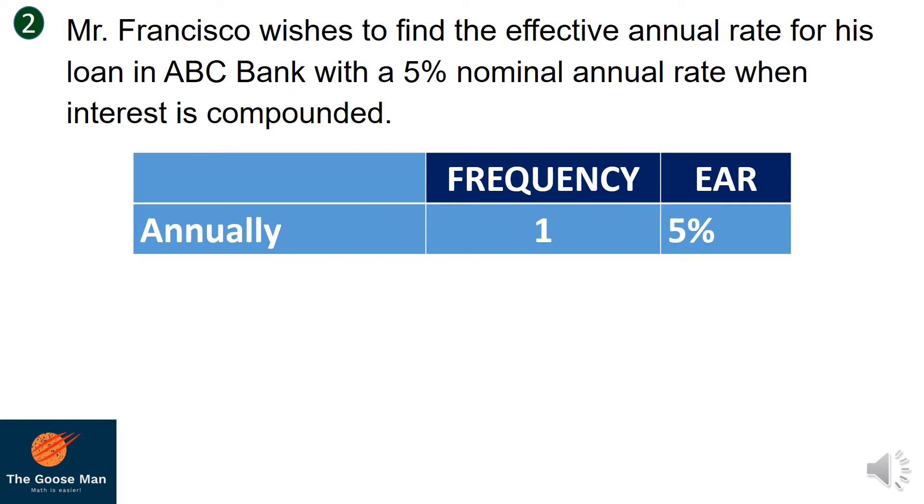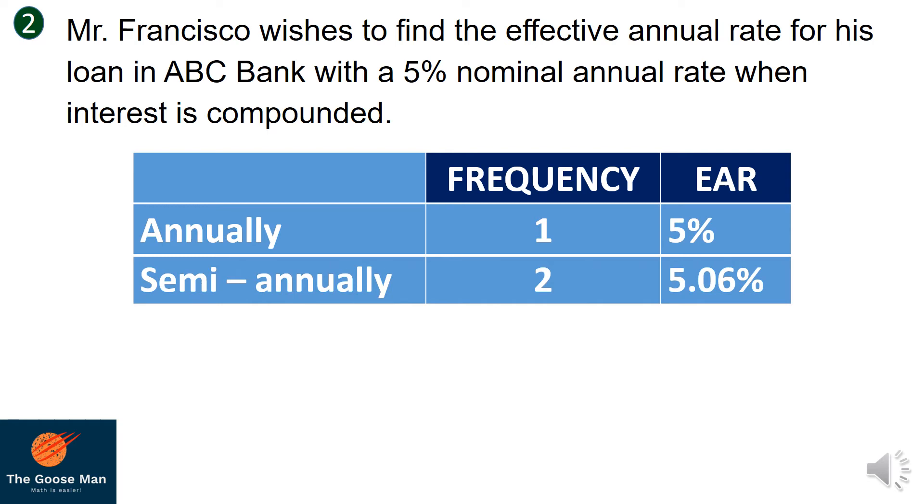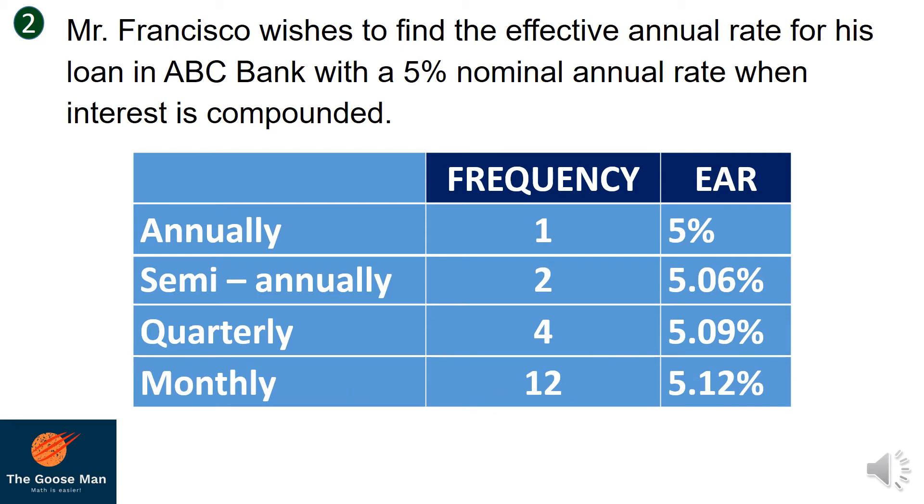The effective annual rate equals 5%. But if we have semi-annually, the frequency is 2, so our effective rate is 5.06%. If we have quarterly, the frequency equals 4, so we have an effective annual rate of 5.09%. For monthly, the frequency is 12, so the effective rate is 5.12%. And finally, we have daily, so our frequency is 365, so the effective annual rate is 5.13%.